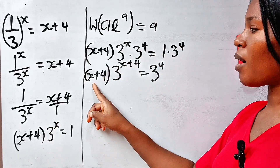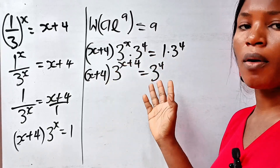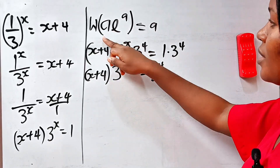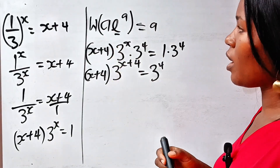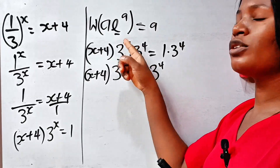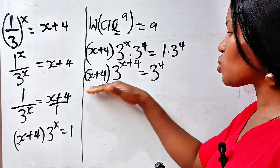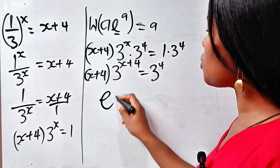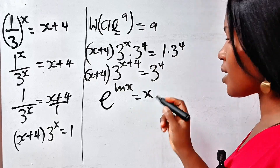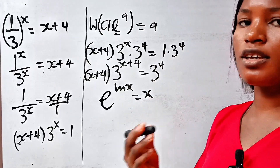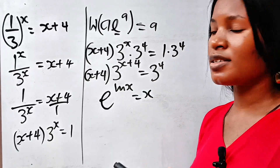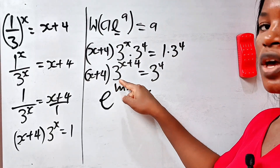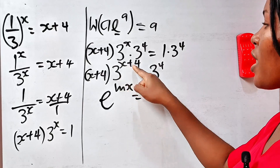Now we have the same power as the coefficient — the coefficient and power are the same. But remember that in the Lambert W form we need e. To introduce e, recall that e to the power of ln x is equal to x. So e to the power of ln(3^(x+4)) still gives us 3 to the power of x plus 4.